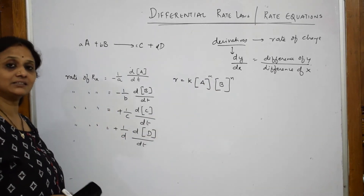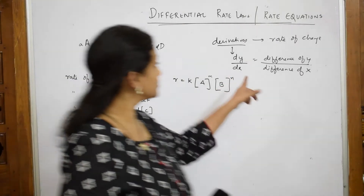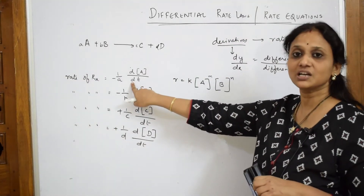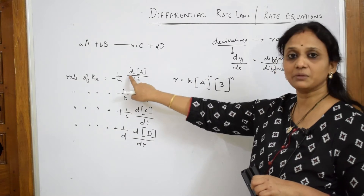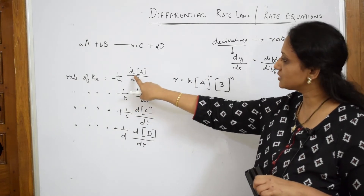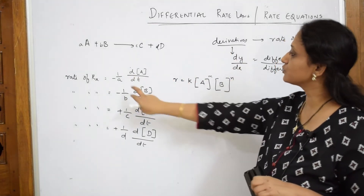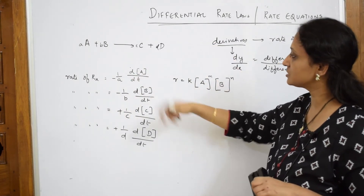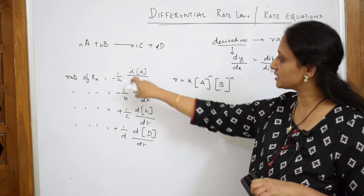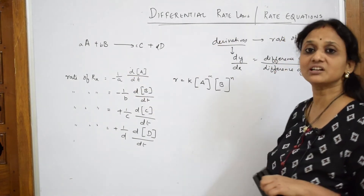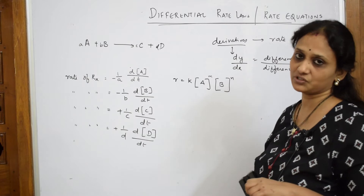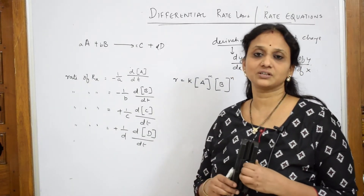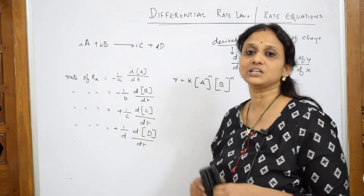This way of representing the rate equation using derivatives, or using differential equations — this is called differential of A by differential of t. Using this derivative concept, I have used this term called differential. Such rate equations which use this particular concept are called differential rate laws or differential rate equations. We will be doing zero order, pseudo first order, and first order kinetics using these differential equations.